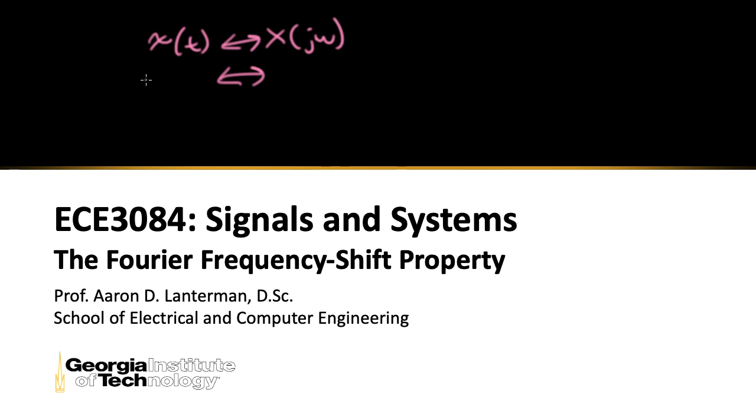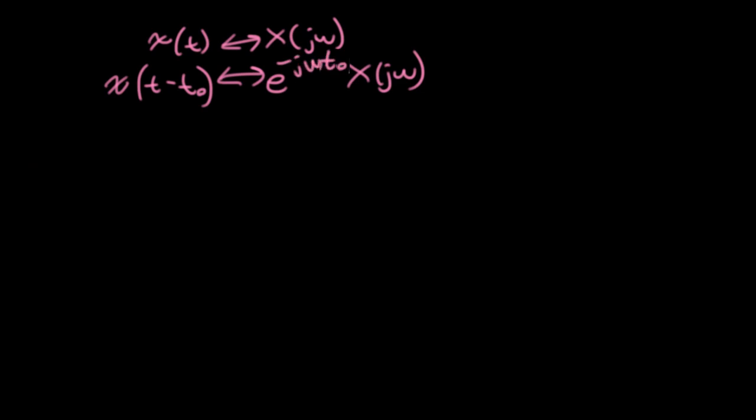Now we've previously seen a time shift property where if we were to subtract t0 in time, gives you a multiplication in the frequency domain by e to the minus j omega t0. So for this derivation, for variety, I'm going to come at it from the other direction and ask,